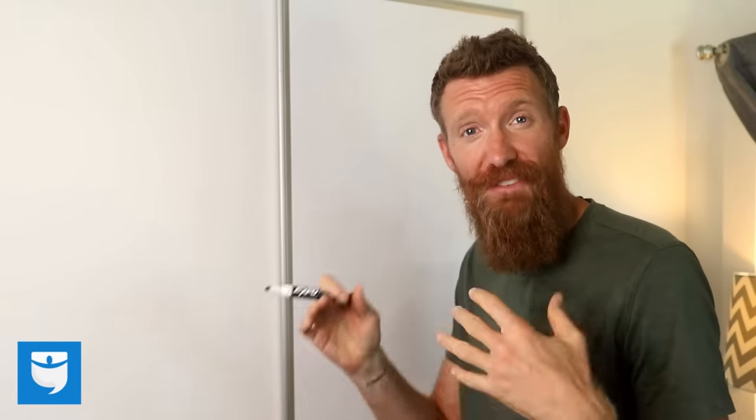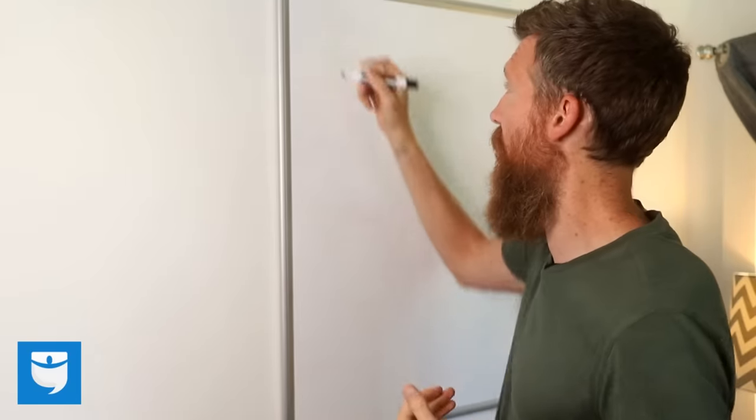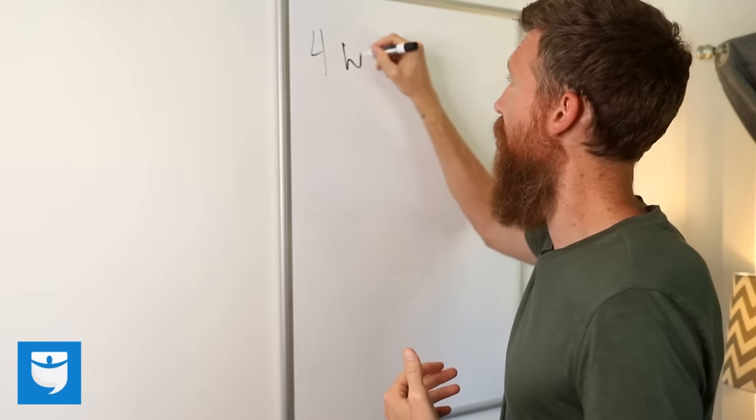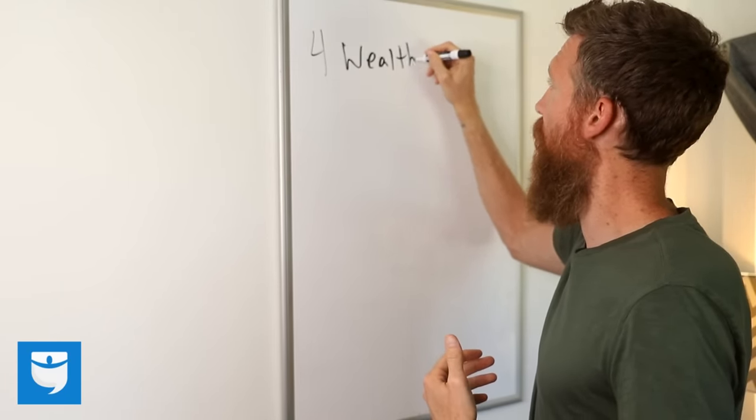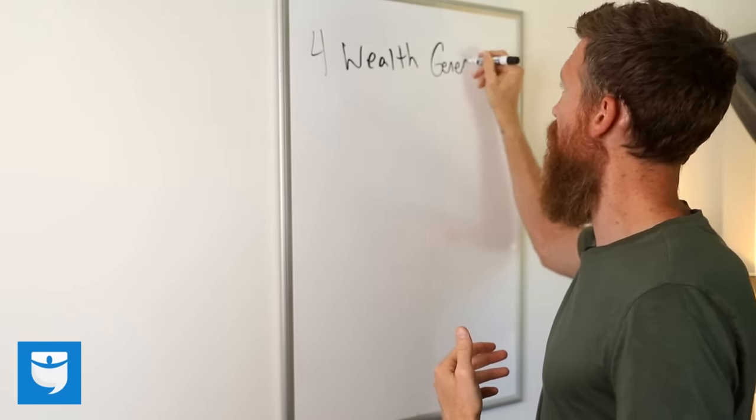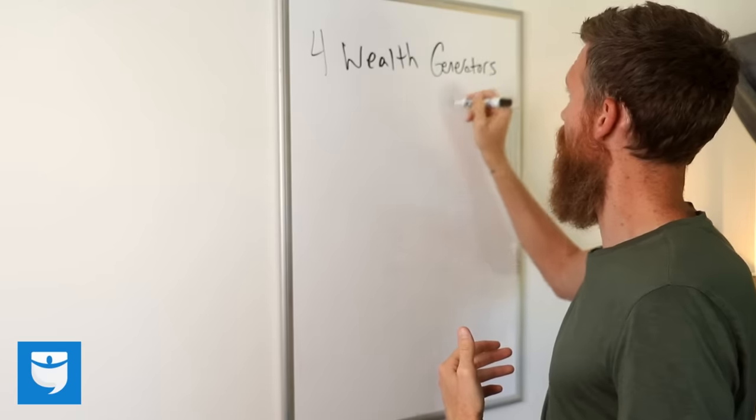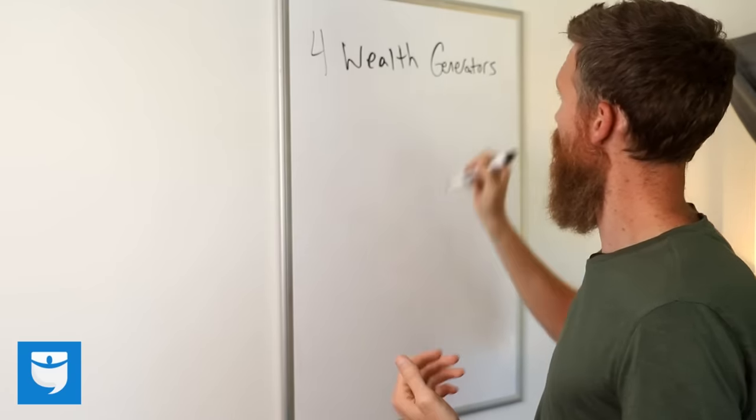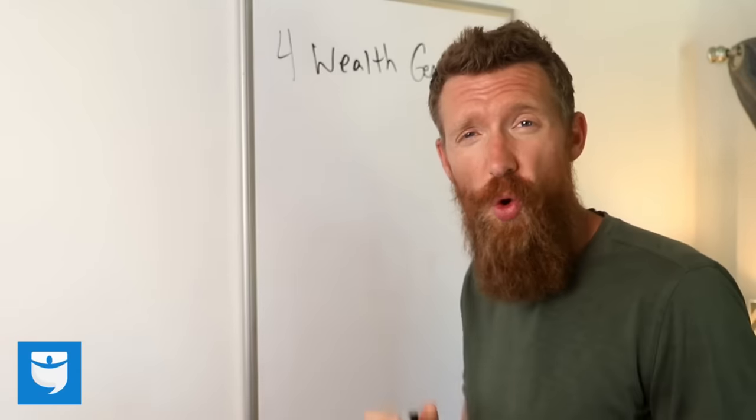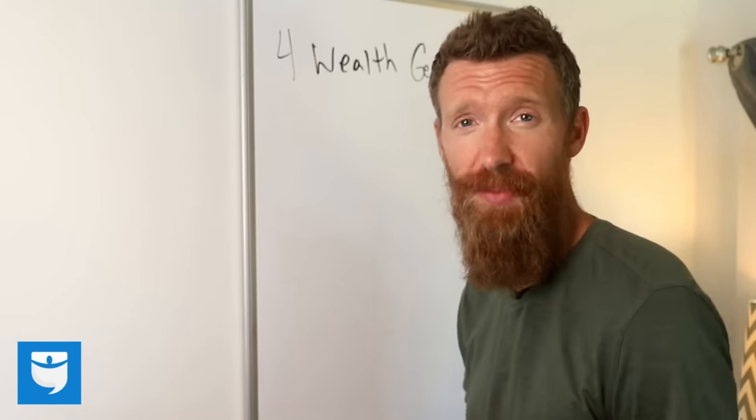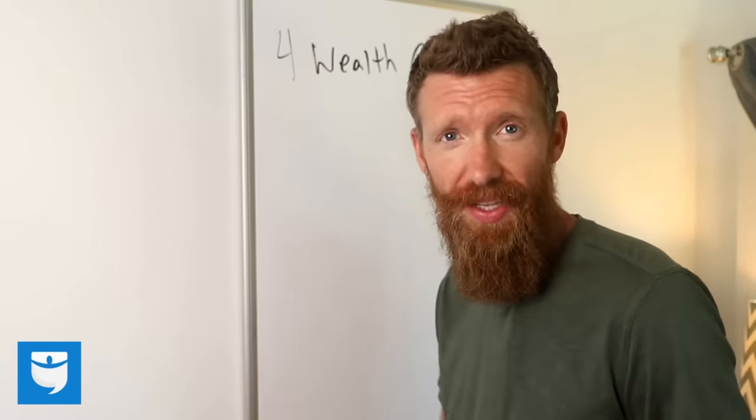And to do that, we're going to talk about something called the four wealth generators. Did I spell that right? Sure. All right. So these are the four things that really make owning rental properties so awesome. And when they're combined together can make you a millionaire.